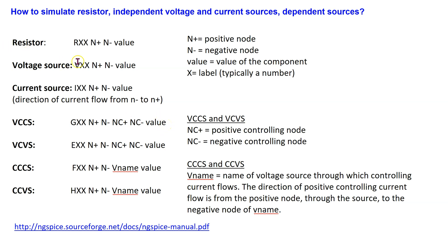The resistor has part name R, the voltage source has part name V, and the current source has part name I. All these parts need to have a unique label. For these parts, we specify the two nodes where the component is connected and also the value of the component. The four dependent sources have part names E, F, G, and H.